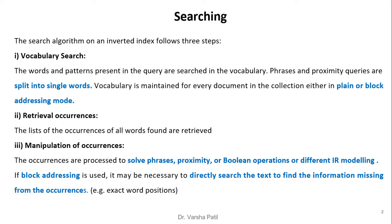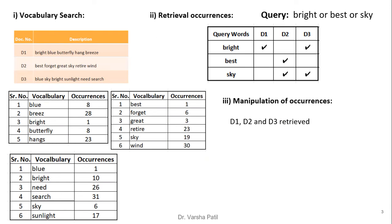The search algorithm on an inverted index follows three steps. First is vocabulary search: the words and patterns in the query are searched in the vocabulary. Phrases and proximity queries are split into single words. The vocabulary is maintained for every document in the collection, either in plane or block addressing mode. Second is retrieval of occurrences: the list of occurrences of all words found are retrieved. Third is manipulation of occurrences: the occurrences are processed to solve phrase, proximity, or boolean operations or different IR modeling techniques. If block addressing is used, it may be necessary to directly search the text to find information missing from the occurrence list.